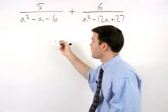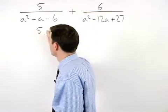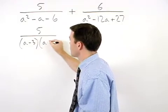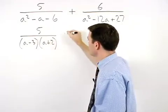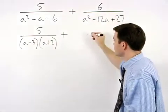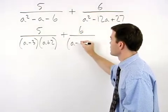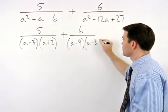So we have 5 over a minus 3 times a plus 2 plus 6 over a minus 9 times a minus 3.